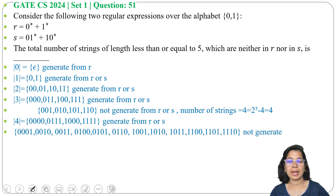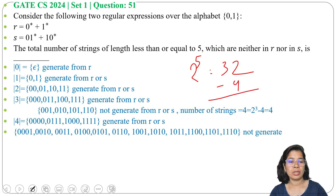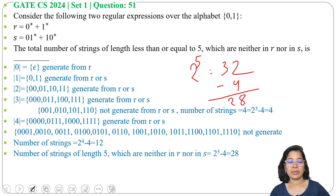Next, length 5. Total 2 power 5 — 32 strings possible. From those 32, only 4 strings can be generated from R and S. So 32 minus 4 is 28 strings of length 5 that cannot be generated from R and S.